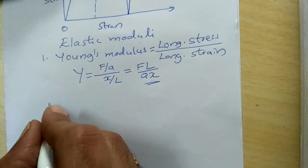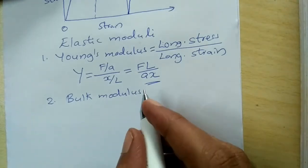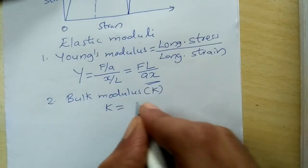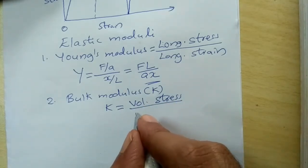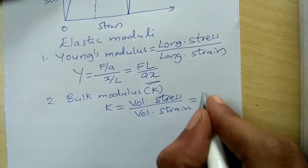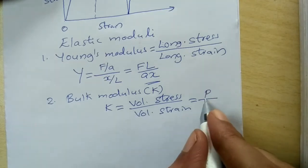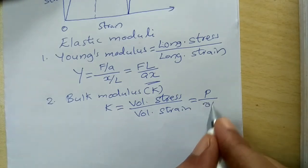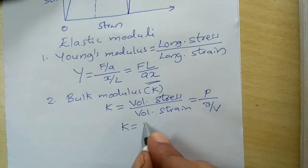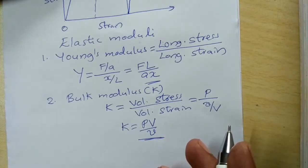The second elastic modulus is the bulk modulus, denoted by K. It is the ratio of volumetric (compressive) stress to volumetric strain. If the stress is pressure P (force per area), and the volumetric strain is the change in volume divided by original volume (ΔV/V), then K = PV / ΔV. The units for Young's modulus and bulk modulus are Newton per meter squared.